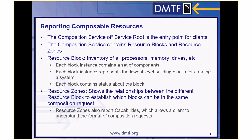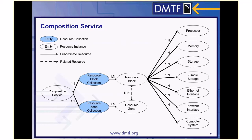Resource zones also report capabilities, which allows a client to understand the format of composition requests. On this resource map, the composition service is found on the left side. It contains two collections for the resource blocks and resource zones. There is a relationship between each resource block and resource zone — a resource block can be in one or more resource zones, and a resource zone can contain one or more resource blocks. Each resource block can contain resources that represent components within the resource block, such as processors, memory, and storage. It can even contain entire computer systems, allowing for a single composed computer system to be created using computer systems from one or more resource blocks.